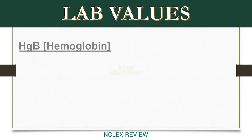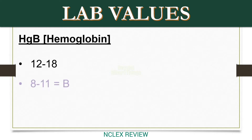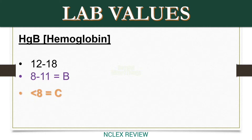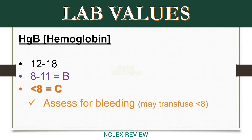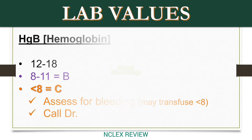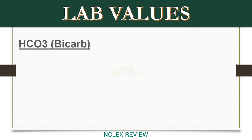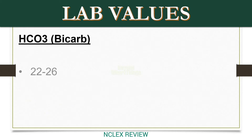Hemoglobin (HGB) normal range: up to 18. Level 8 to 11 equals B. Less than 8 equals C — assess for bleeding, may transfuse if less than 8, call doctor. HCO3 (bicarb), normal range 22 to 26 — abnormal equals A.